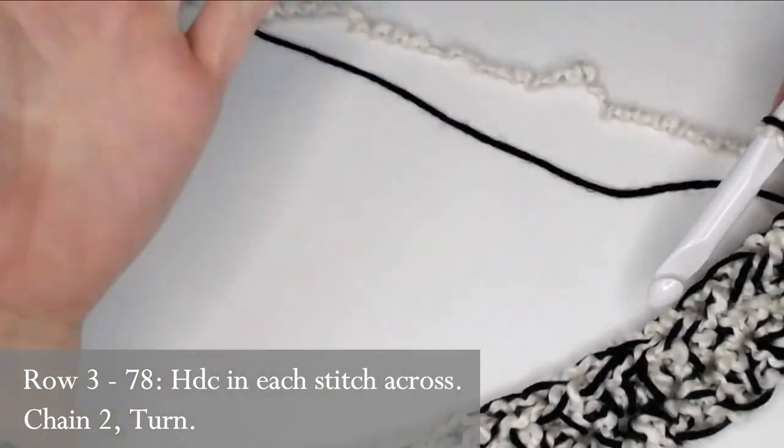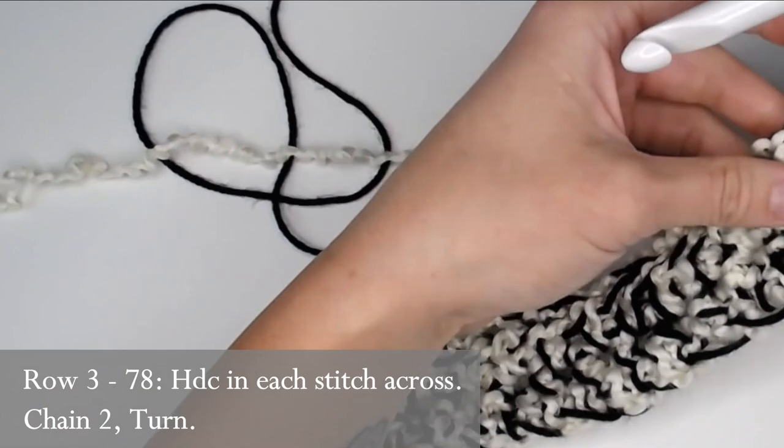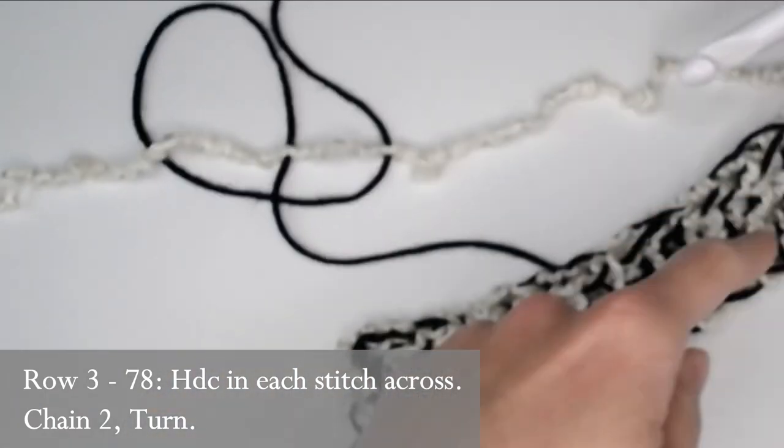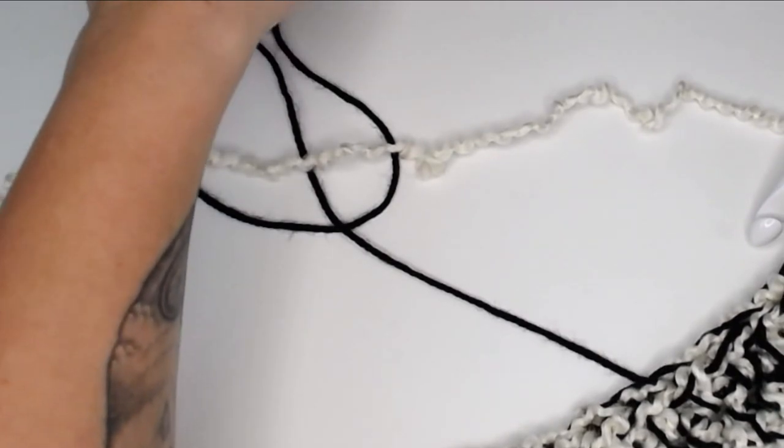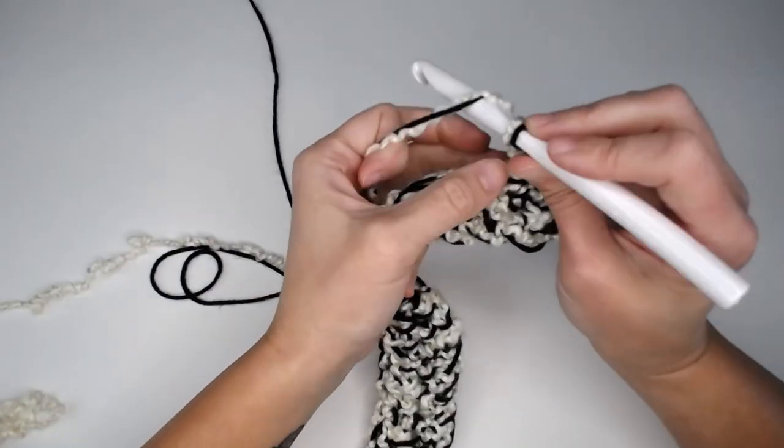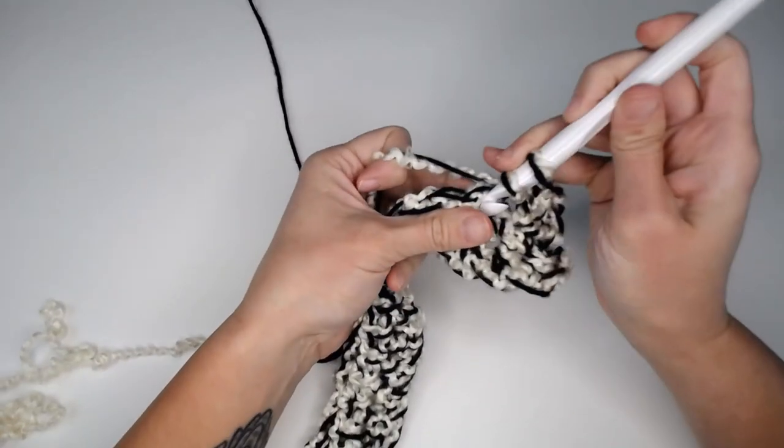Or if you want, guys, you can go even longer than that and make an even longer scarf than what I've made. The scarf that I've made is 15 stitches across and 78 rows long. That's it. Go ahead and continue going until you have reached your desired length or the end of row 78.